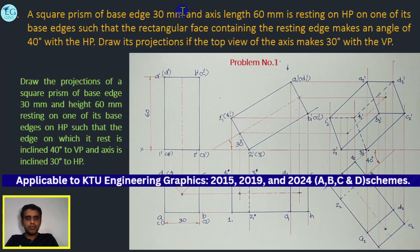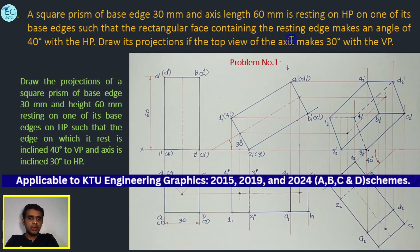A square prism of base edge 30 mm and axis length 60 mm is resting on HP on one of its base edges such that the rectangular face containing the resting edge makes an angle of 40 degrees with HP. Draw its projection if the top view of the axis makes 30 degrees with VP.